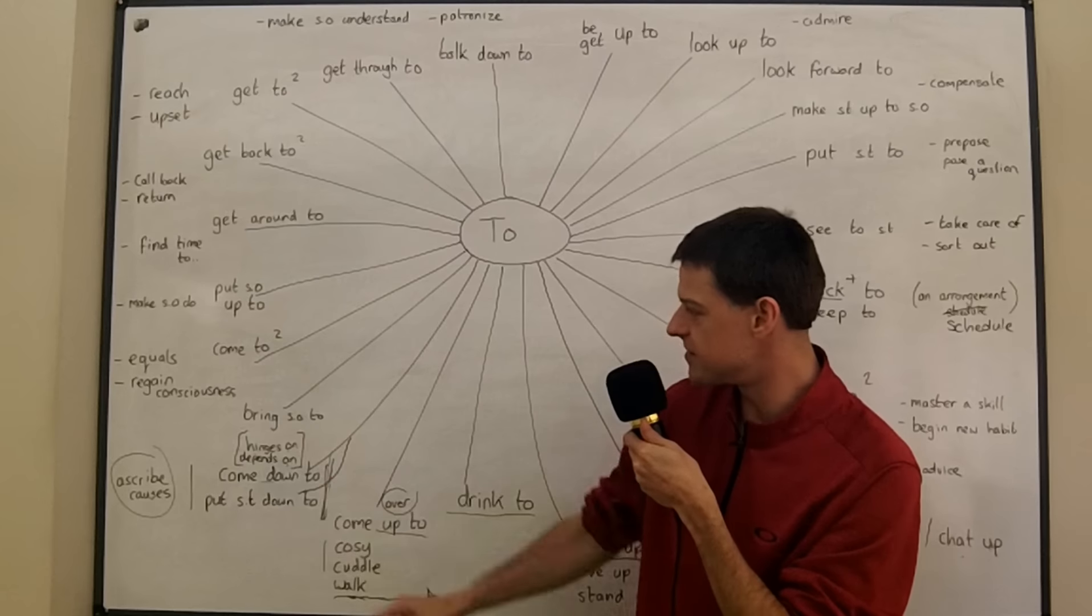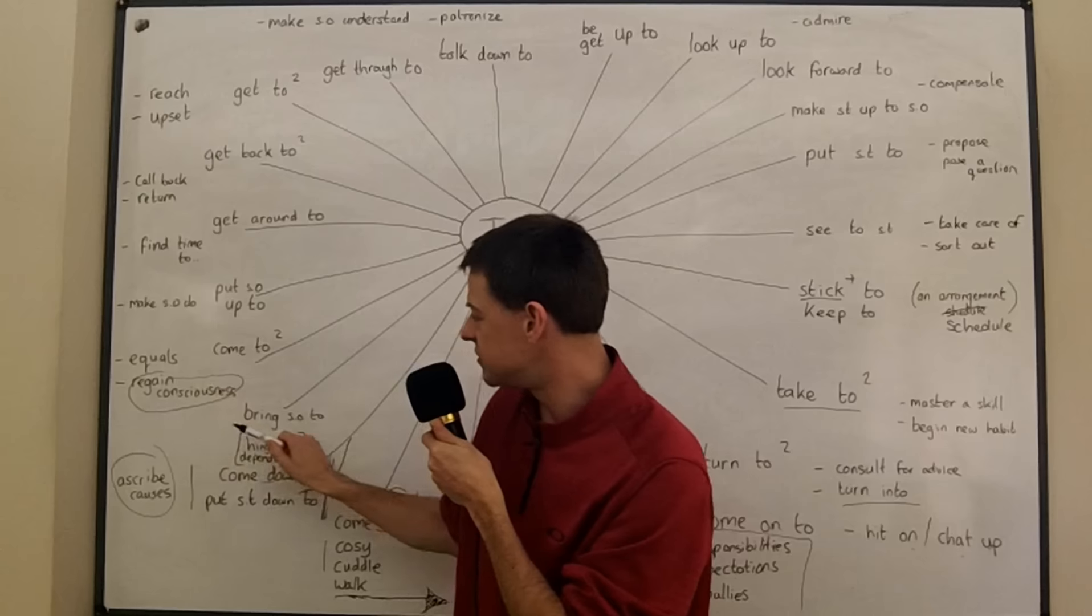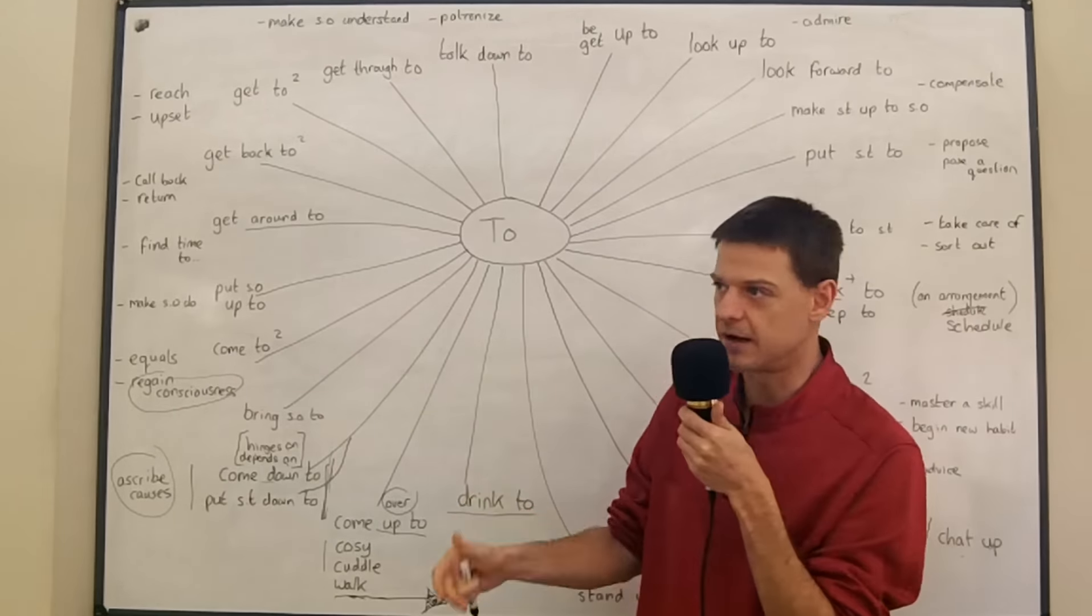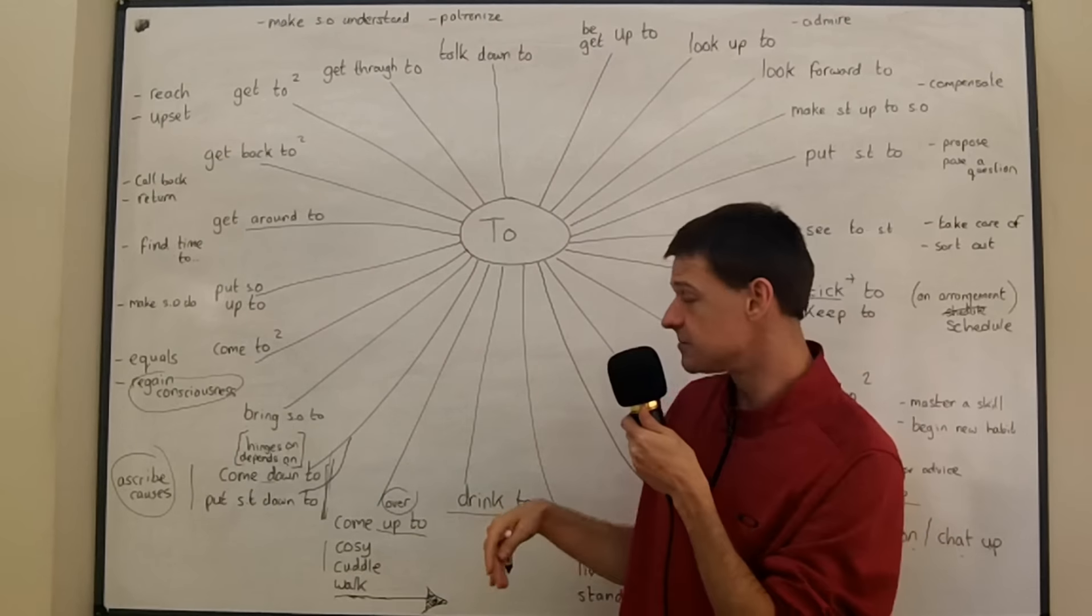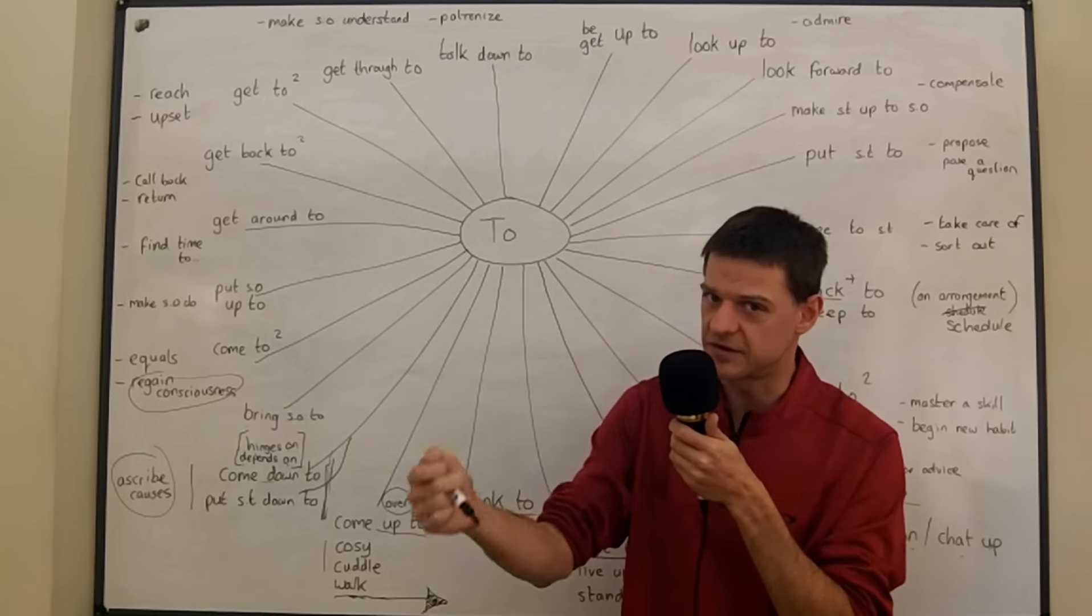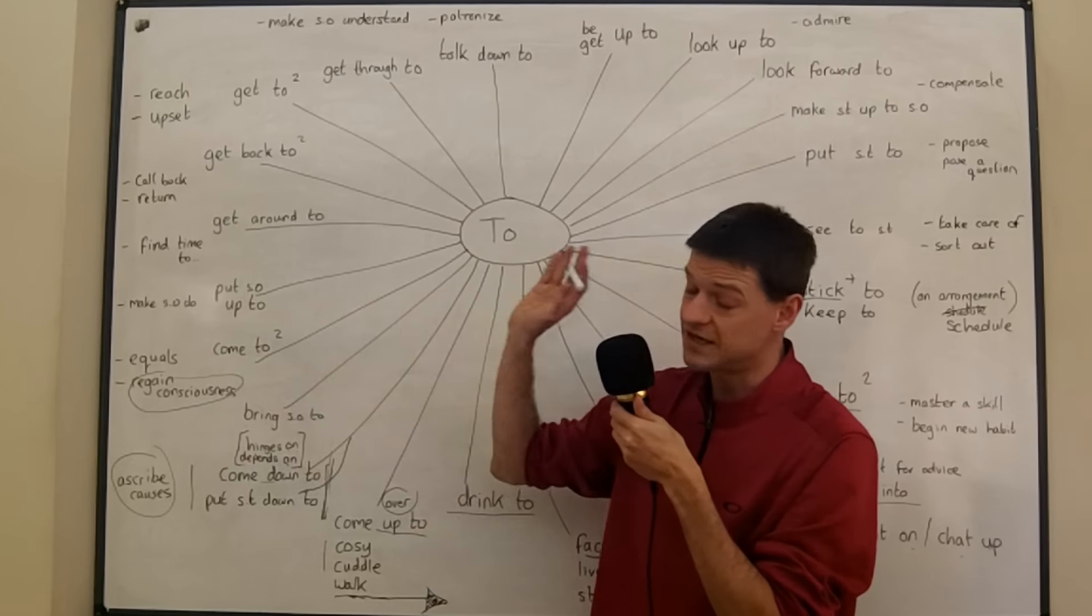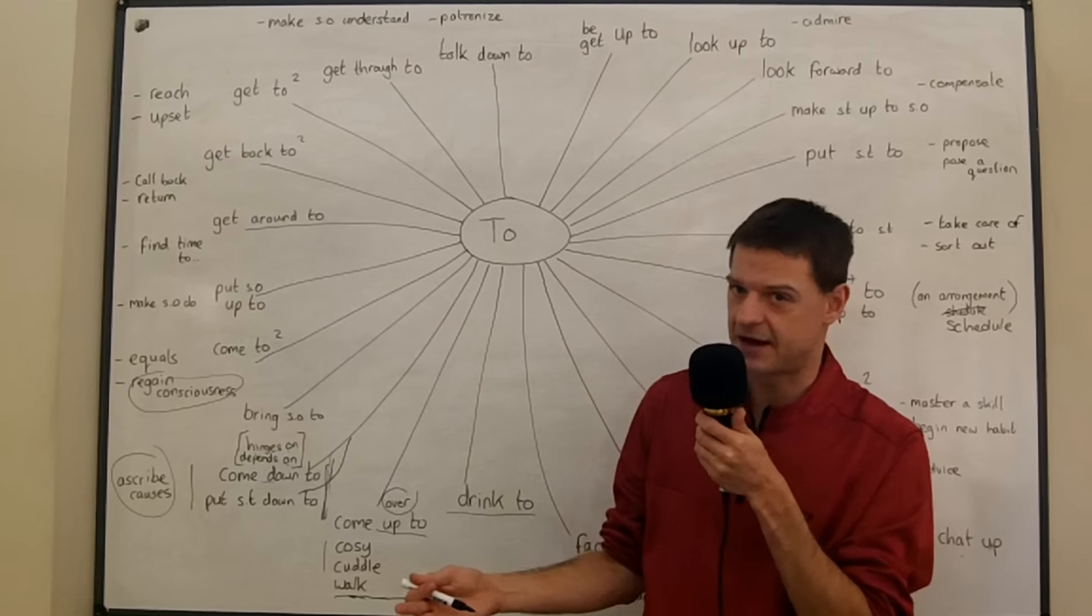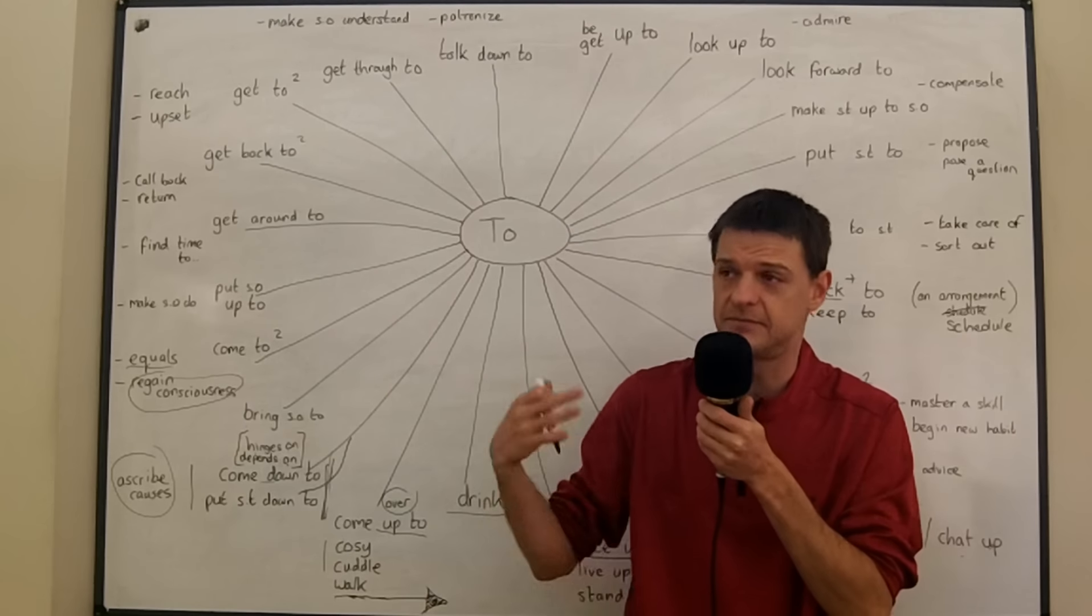Now if you bring someone to you help them regain consciousness. You bring them to, maybe you use some kind of very pungent aroma and you put it under their nose and you bring them to. You can also say bring them round, but you can say they came to. They came to when I put the smelling salts under their nose, they came to, they regained consciousness, they came round also possible. But you could say all of my shopping today came to 15 pounds, and it means all the different items added together they come to equals. That's all it is, come to equals.